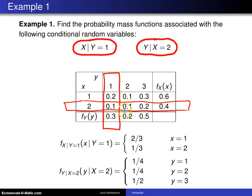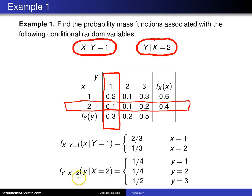Then we take 0.1 divided by 0.4 again, which is one fourth, associated with Y equals 2. Finally, we take 0.2 divided by 0.4, which is one half, associated with Y equals 3. So here is the conditional distribution of Y given X equals 2. Notice that these three values sum to 1, as they should, making this a legitimate probability mass function.